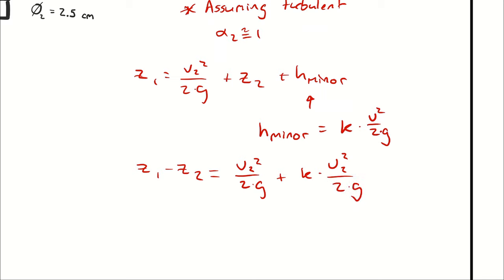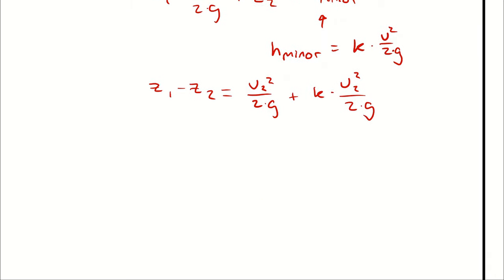Because v2 squared over 2 times gravity appears in both the kinetic energy term and the minor loss calculation, I can factor that out.